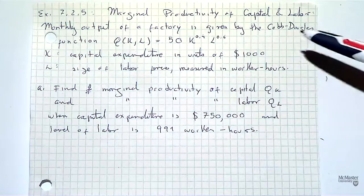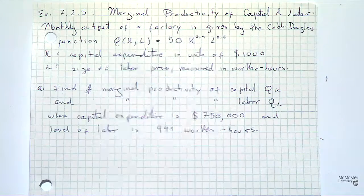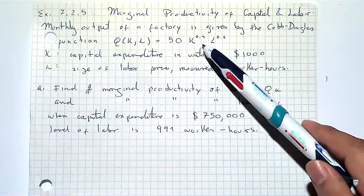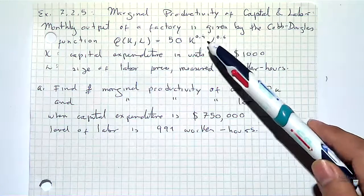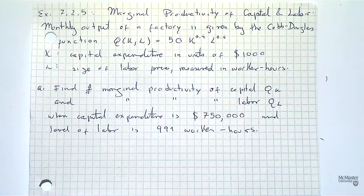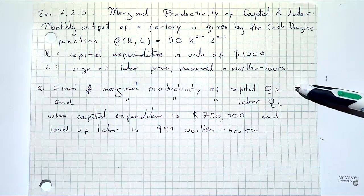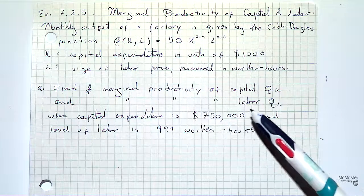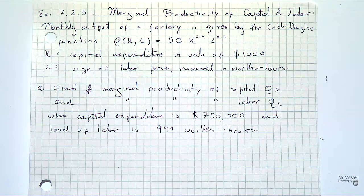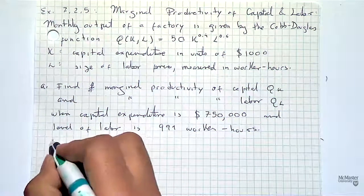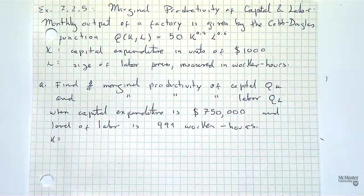K is the capital expenditure in units of $1,000. L is the size of the labor force, measured in worker hours. You're given this particular form, which we have studied before as the Cobb-Douglas model. The main feature of this model is a constant and two terms with powers, with the condition that the powers add to one, which is satisfied in this case.